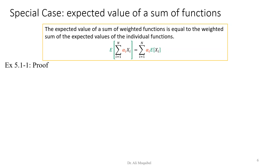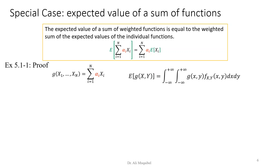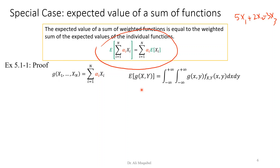A very important special case: what if we want to find the expected value of a weighted sum of random variables? For example, finding the expected value of 5x1 + 2x2 - 3x3. We will find that the expected value will be the sum of the weighted expectations. The expectation can go inside, which makes sense because expectation is a linear operation. We define g(x) here as a weighted sum with weights alpha_i.